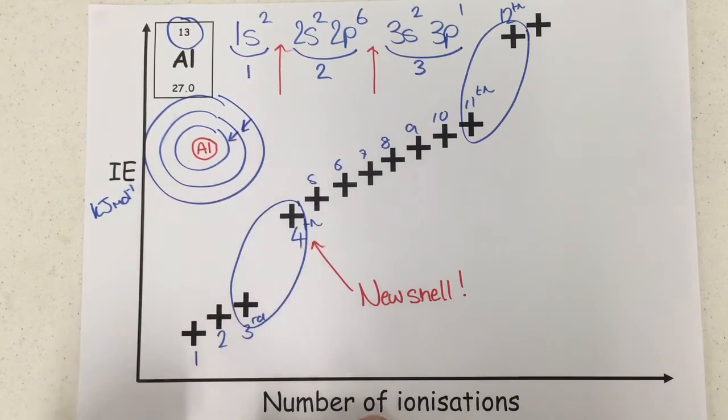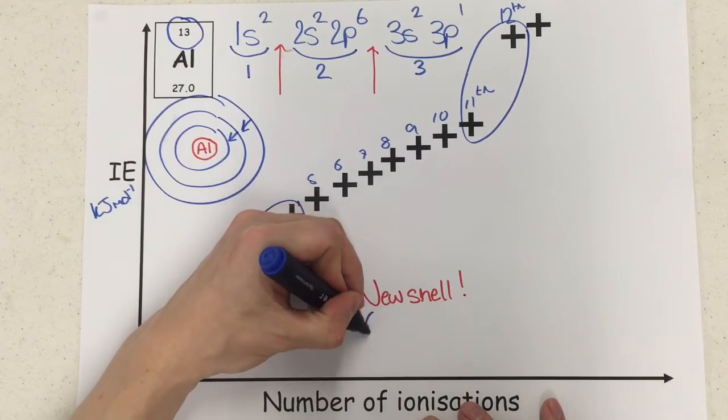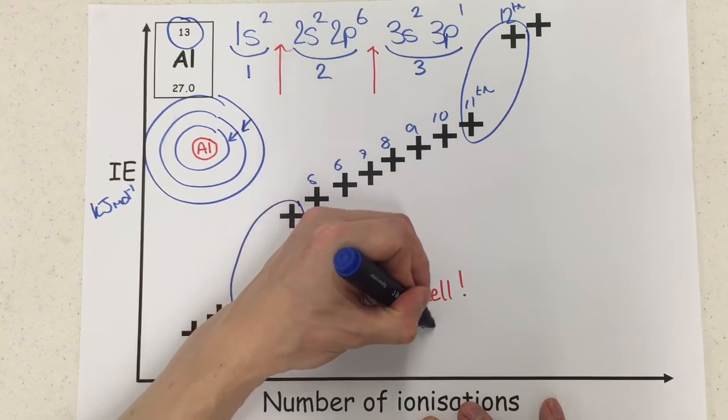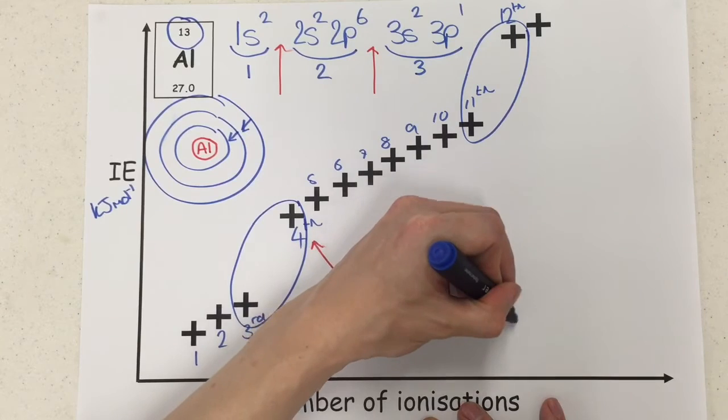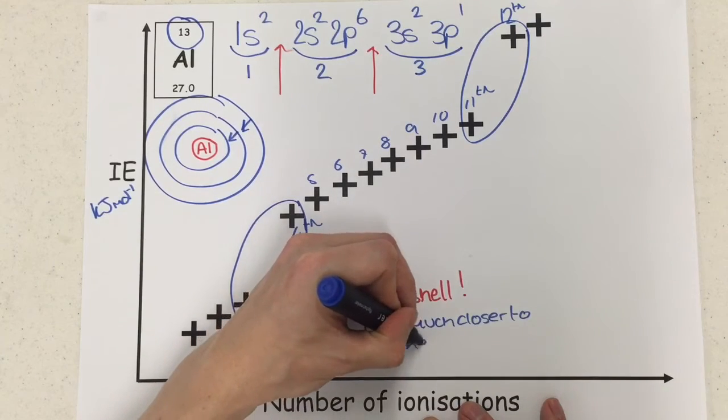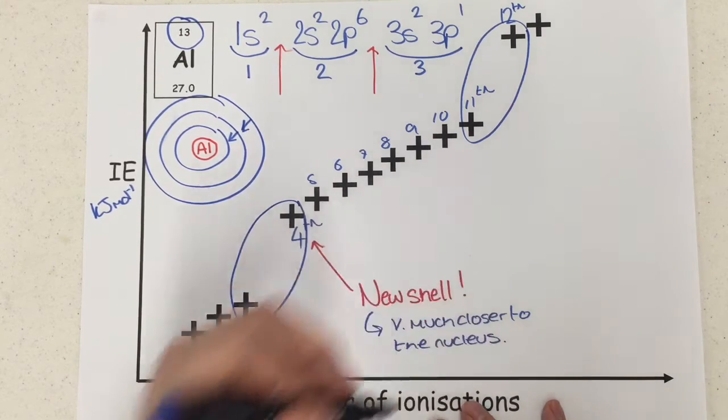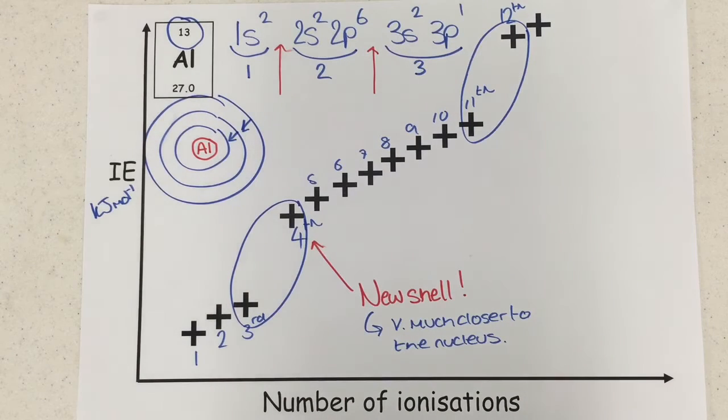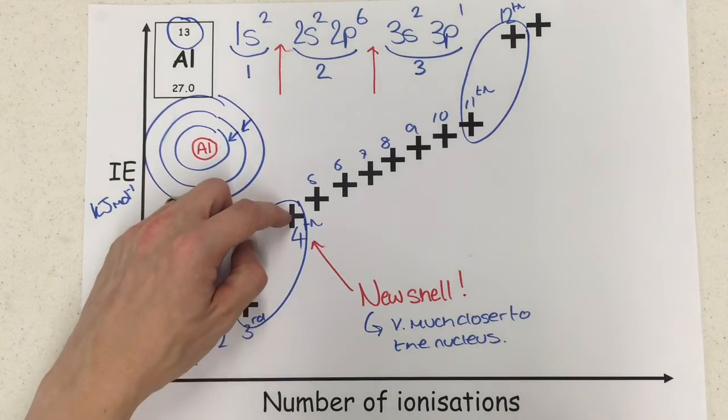All these electrons for instance, and all those electrons for instance, and these, are each in their respective own shells. But then when you have to transition between a shell, all of a sudden it becomes more difficult to remove that next electron. Now the reason isn't because the shell is full, it's because the shell is much closer to the nucleus.